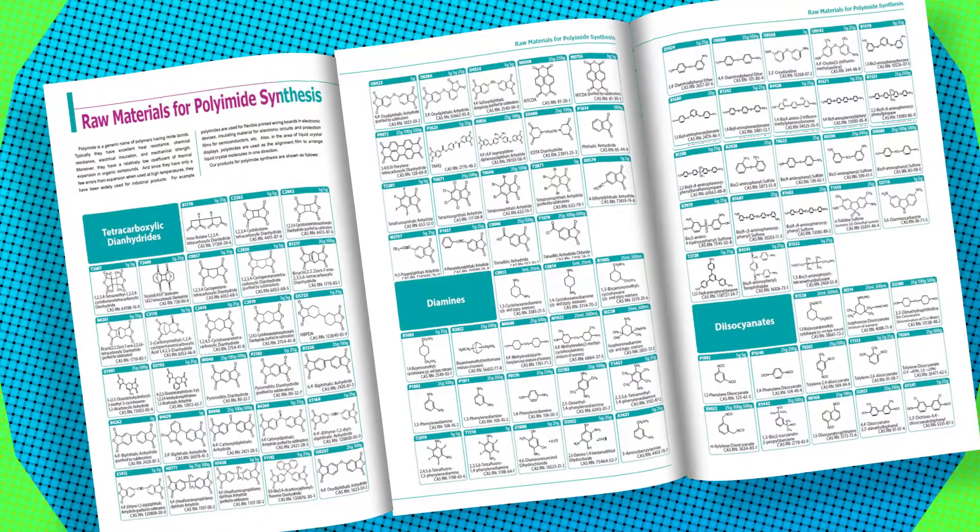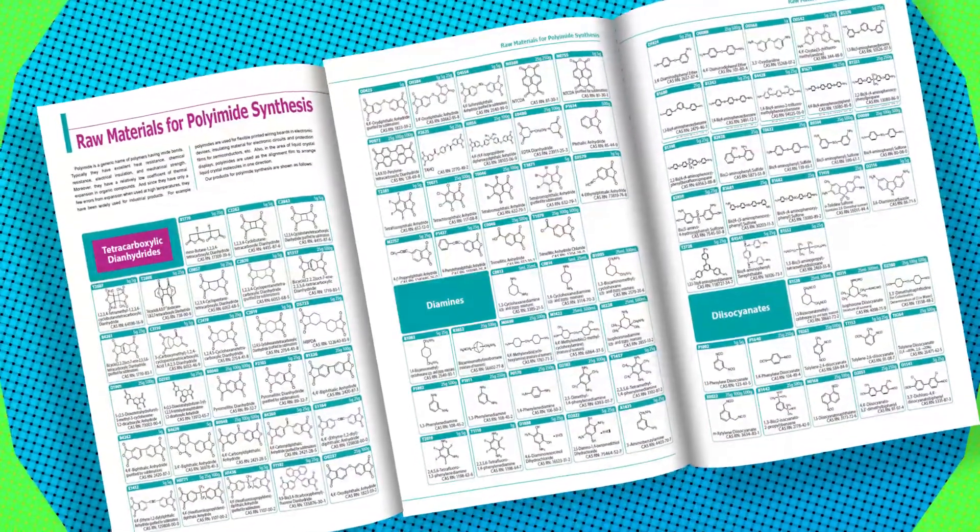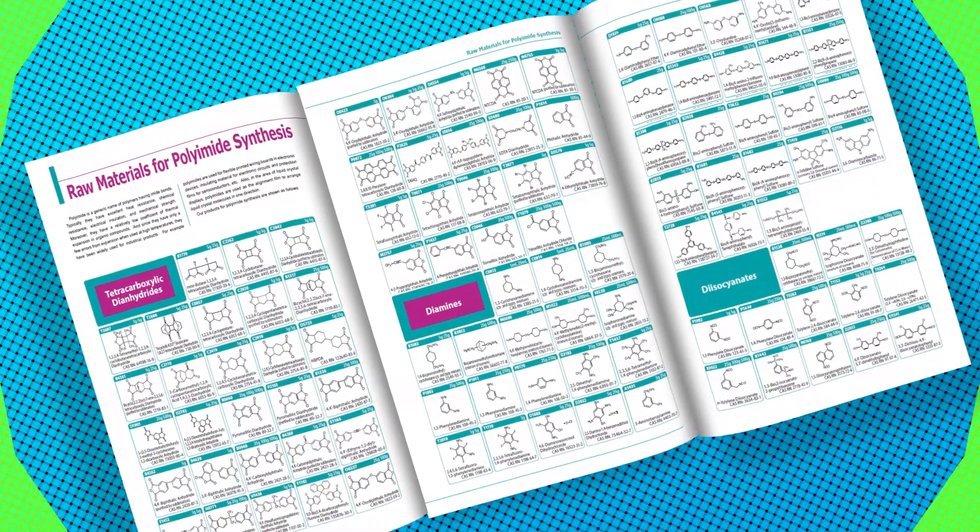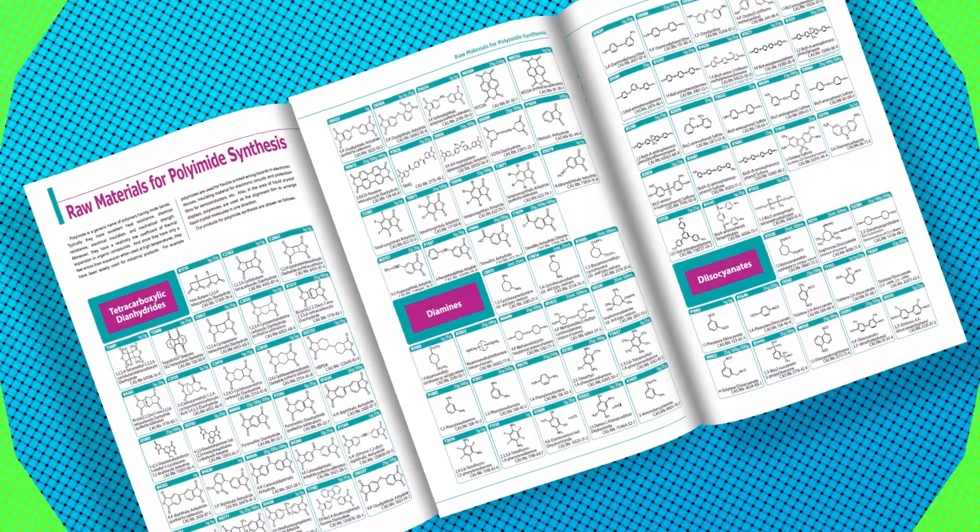TCI offers a wide variety of raw materials for polyimide synthesis. Our products include aromatic and aliphatic carboxylic anhydrides, aromatic and aliphatic amines, and diisocyanates.